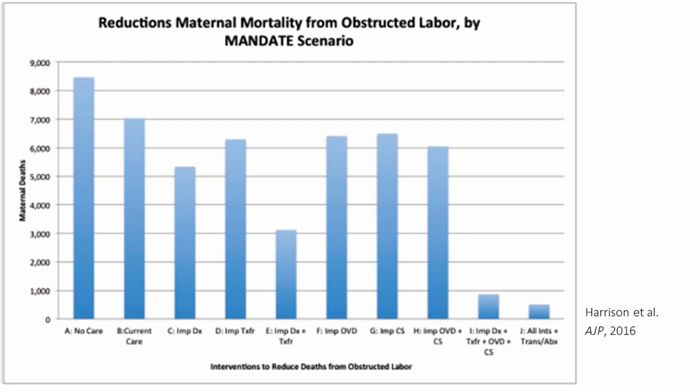Moving on to further interventions: operative vaginal birth — meaning forceps and vacuum delivery — and cesarean birth. If everybody who needed operative vaginal delivery or cesarean birth had access to it, interestingly, it doesn't drop maternal mortality that significantly on its own. It's only when we combine diagnosis, transfer, access to operative vaginal delivery, and access to cesarean section that we really see a drop to under 1,000 deaths per year from obstructed labor. The picture is that diagnosis, transfer, and access to appropriate interventions are all necessary to have a real impact.